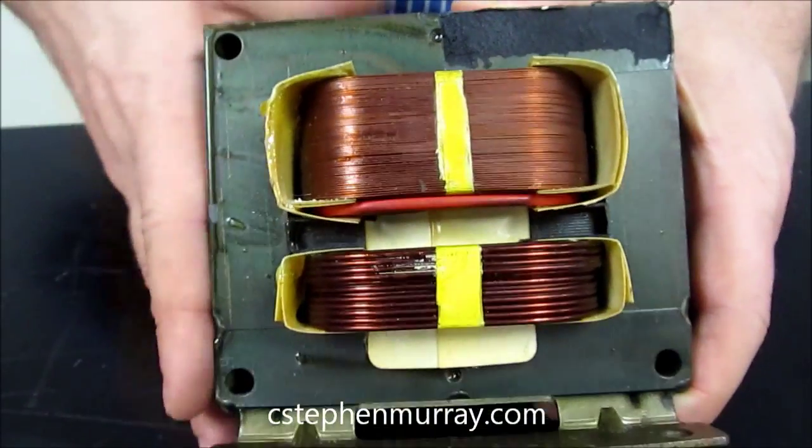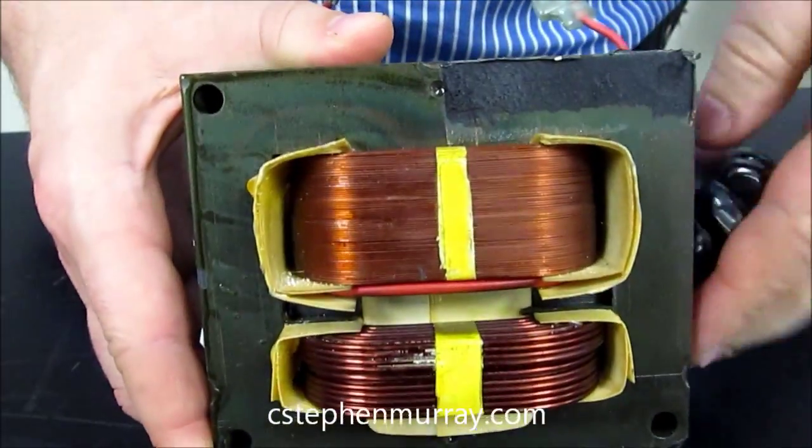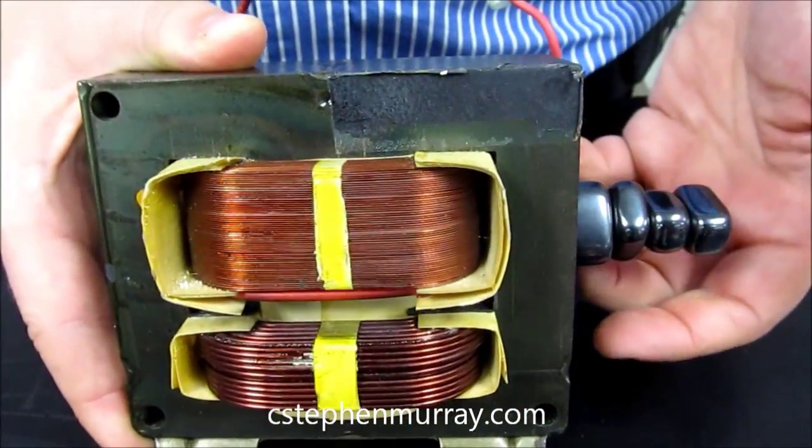This right here is made out of iron. I have some magnets here to prove that. What is the iron for? It just strengthens the magnetic field.